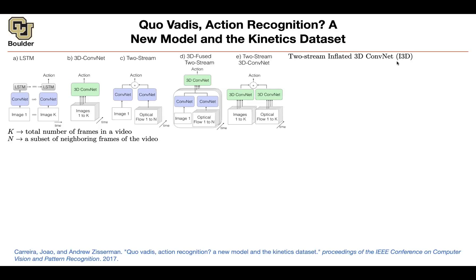It's called I3D — Inflated 3D. What do we mean by inflated? You can treat a single image as a video by just replicating the same image over and over again.